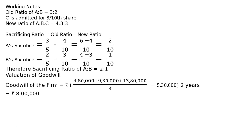Valuation of goodwill: goodwill of the firm equals super profit multiplied by years' purchase. Super profit equals average profit minus normal profit, multiplied by 2 years' purchase. To calculate average profit, profit of 3 years is given: Rs. 4,80,000 plus Rs. 9,30,000 plus Rs. 10,13,000, divided by 3. Normal profit is Rs. 5,30,000 and years' purchase is 2 years.